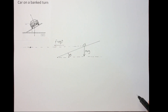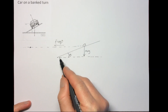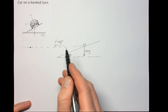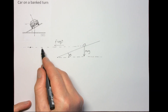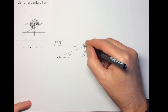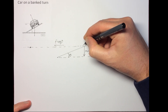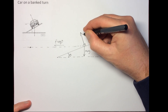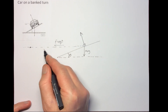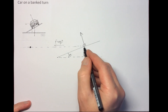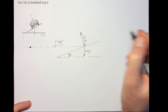Here we have a car on a banked track, going around in a circle. There's your car, there's the track, there's the horizontal, and the circle that this car is going around in — if we assume it's in the same place on the banking all the time. The weight of the car is acting vertically downwards, and there's a normal contact force from the track acting this way. We know there must be a centripetal force acting towards the center of the circle. This normal contact force we'll call a reaction force R.